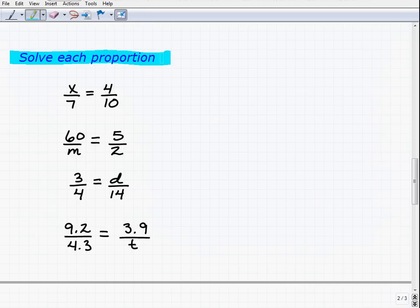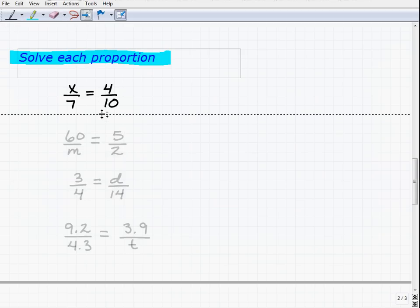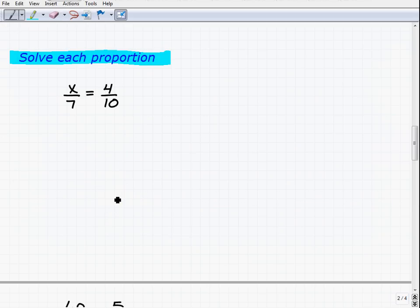They're telling you that these fractions are, in fact, proportions. So their cross products must be equal to one another. With that said, we can solve these proportions rather easily.